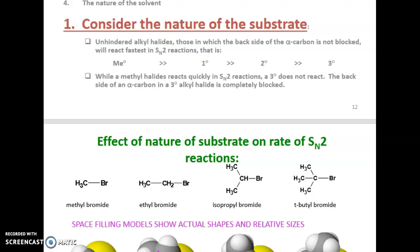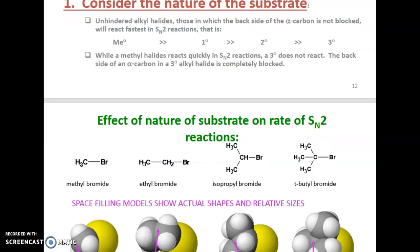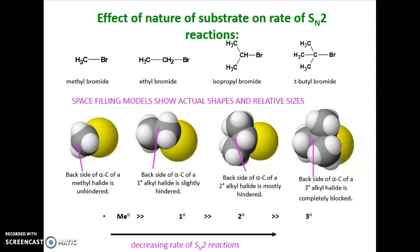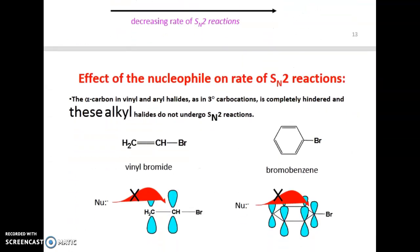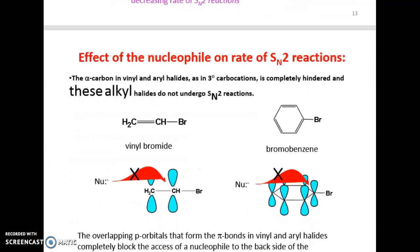Consider the effect of the nature of the substrate on SN2 reactions. With methyl bromide, isopropyl bromide, and tert-butyl bromide, there is a decreasing rate of SN2 reactions from methyl to tertiary due to steric hindrance. This also affects the rate when vinyl bromide and bromobenzene are considered.